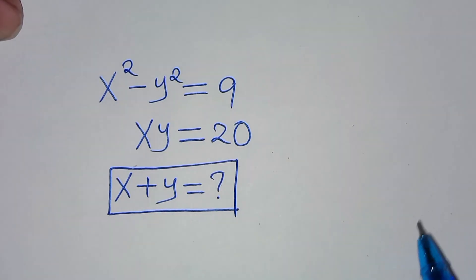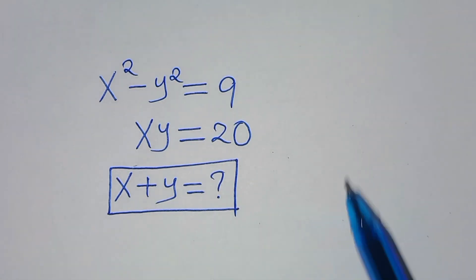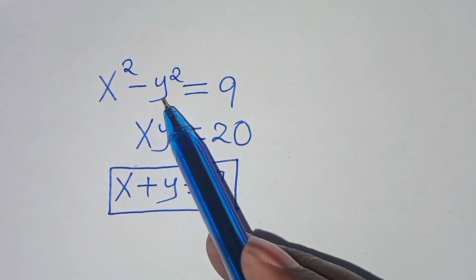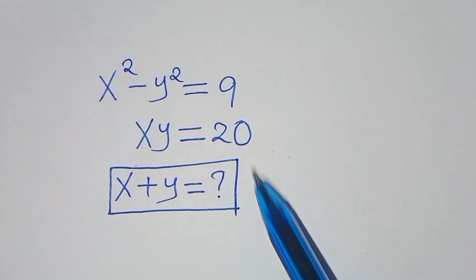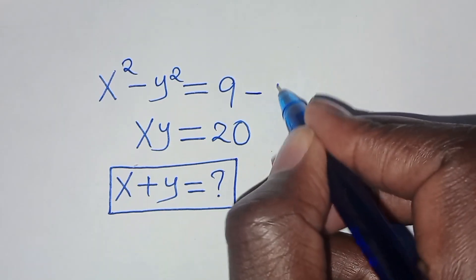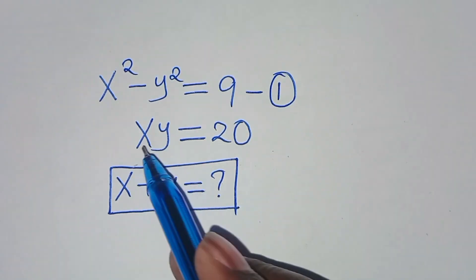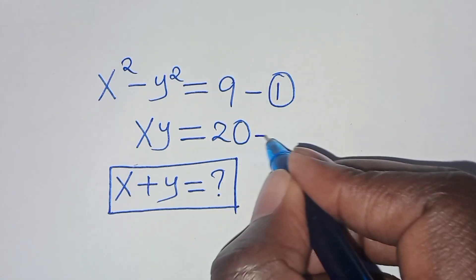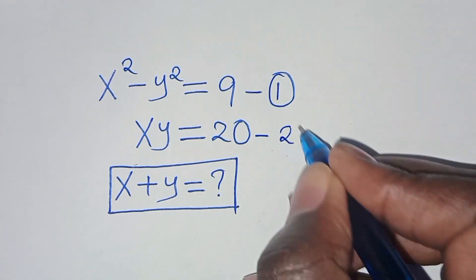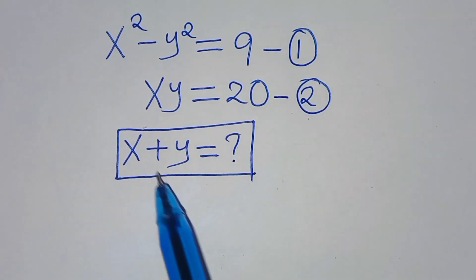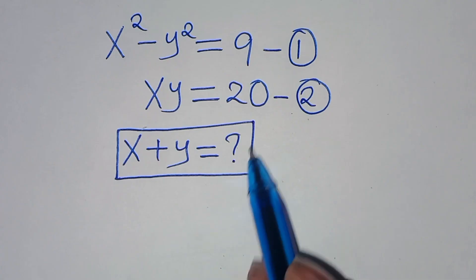Hello everyone, you are welcome to solve this nice algebra problem. We have x squared minus y squared equals 9 — let's call this equation 1. And x times y equals 20 — let's call this equation 2. Now, what is the value of x plus y?